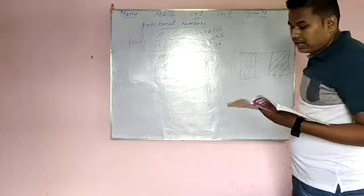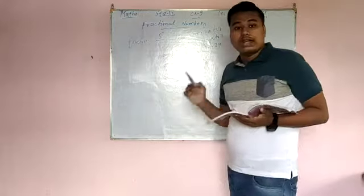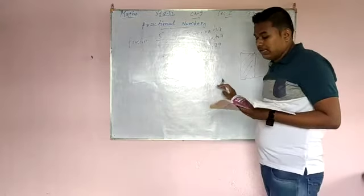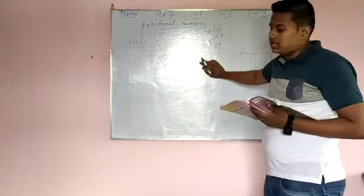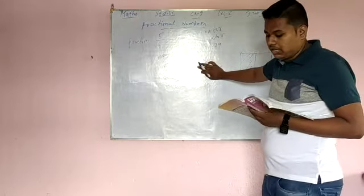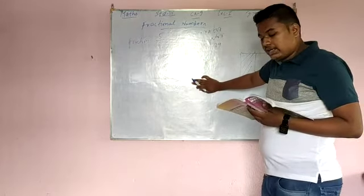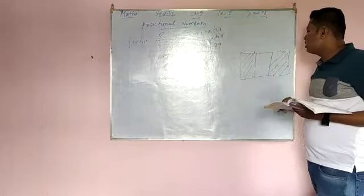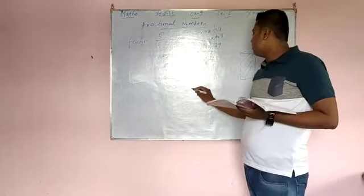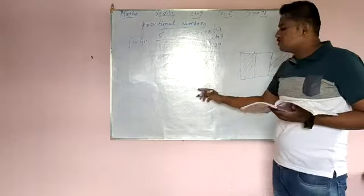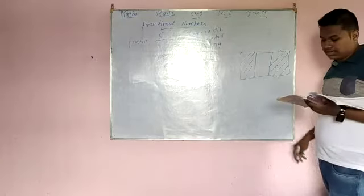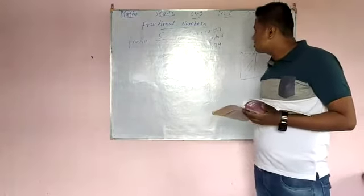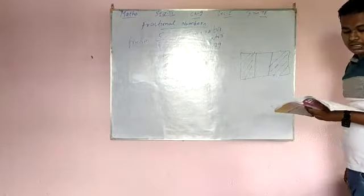Third question is: write the fraction for the shaded part. You have to write the fraction. The fraction will always contain numerator and denominator. In question C, it says write the fraction for the shaded portion. Count: 1, 2, 3 — total 3 parts. This total 3 is the denominator. How many parts are shaded? 1 and 2 — so 2 parts are shaded. Which means 2 by 3 parts are shaded.